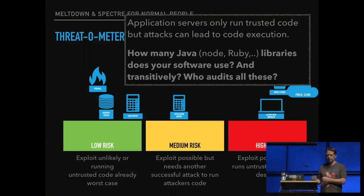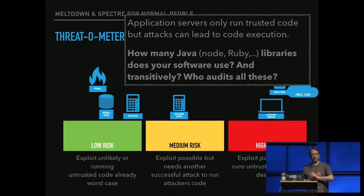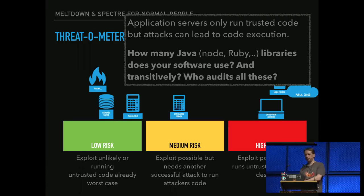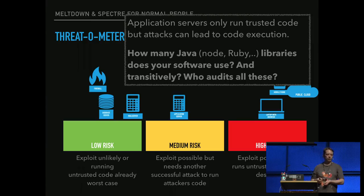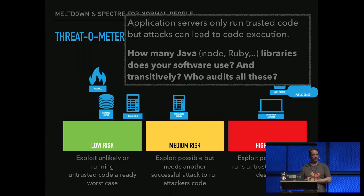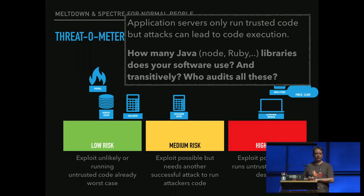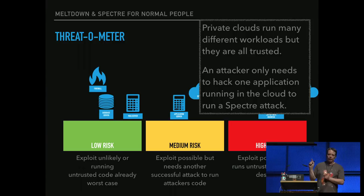If I was an evil genius, I would look for a small library that's at the bottom of the library food chain, so it's included everywhere. Then I would go to the maintainer — the one who publishes the artifact to Maven or Node or whatever — and either give him money or show him a picture of his family. I would publish something that waits a few weeks, a month or two until I get some spread, and then I would take over data centers because they run a lot of code.